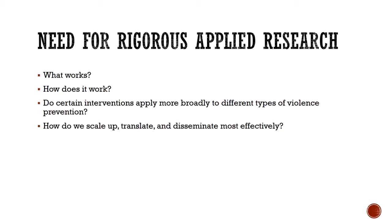Finally, we recognize the need for rigorous applied research—research around what works. Integrating what we understand from different disciplines will help us understand what is working to reduce violence and how those interventions work. We need to look at whether certain interventions apply more broadly to different types of violence prevention or only work in specific instances, and we need rigorous applied research on how to scale up, translate, and disseminate effective interventions most effectively.